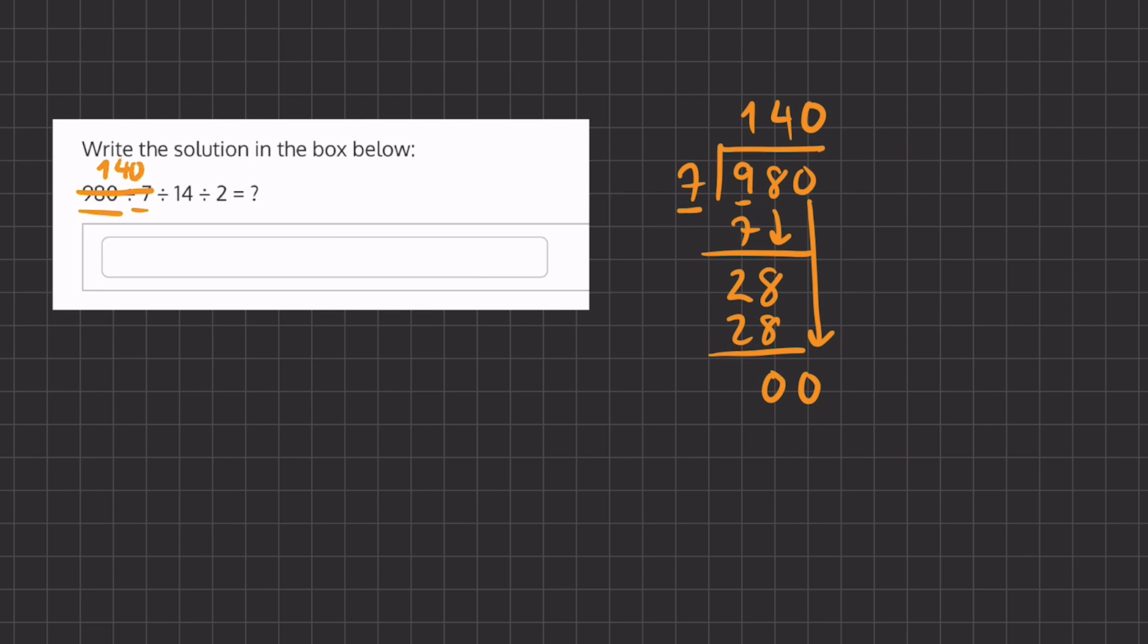So now let's begin by dividing again, 140 divided by 14. And if it doesn't jump to you that dividing 140 by 14 is 10, we can divide using long division.